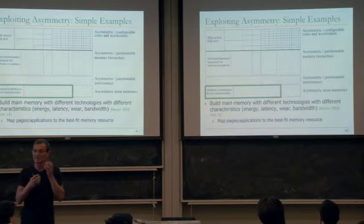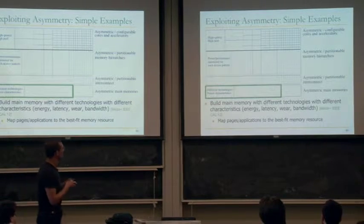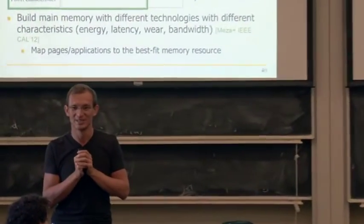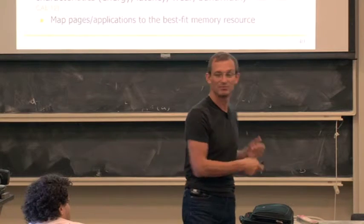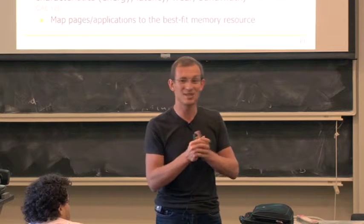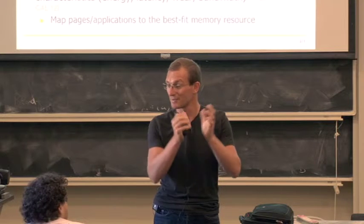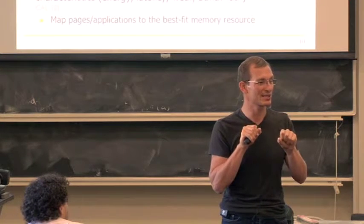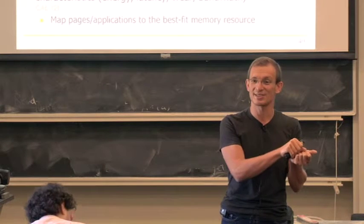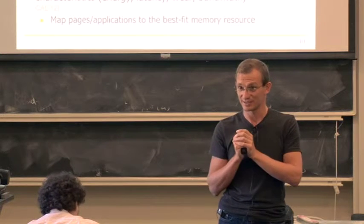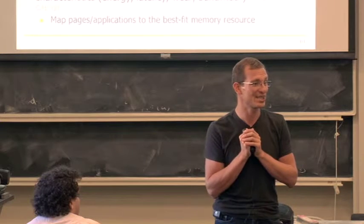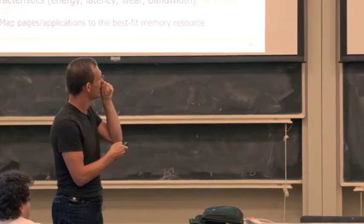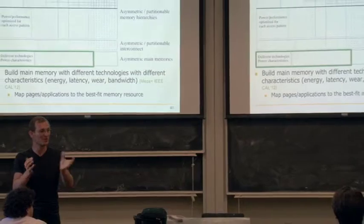Or at the main memory level you can have different technology characteristics. Maybe you don't want all DRAM in main memory because it may be costly, inefficient, or require refresh. If you have some other technology with better energy characteristics — phase-change memory, magnetic memory — that doesn't require refresh, you have multiple memory technologies. You can place latency-critical data in DRAM and other data that's not latency-critical in a slower but lower-energy technology. We can map pages and applications to the best memory resource and build the entire system this way.